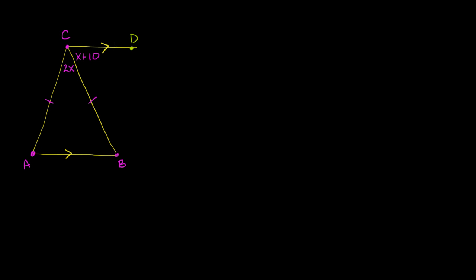Given that this line and this line are parallel, we can extend this into line CD so it keeps going in both directions. The fact that they've given us a parallel line tells us we can use what we know about transversals and parallel lines to figure out some of the angles here. You might recognize that line CB is a transversal for those two parallel lines.